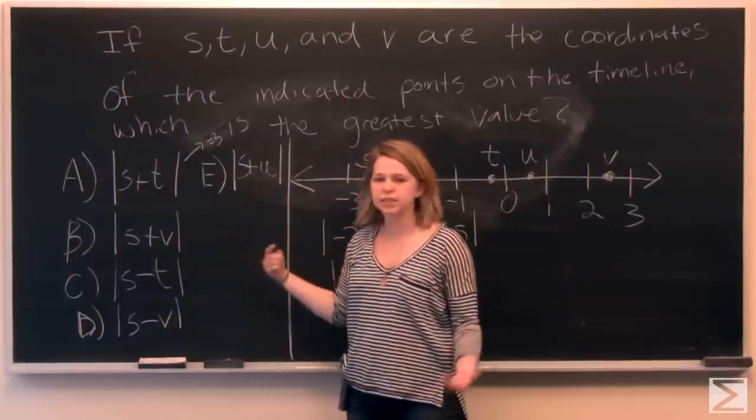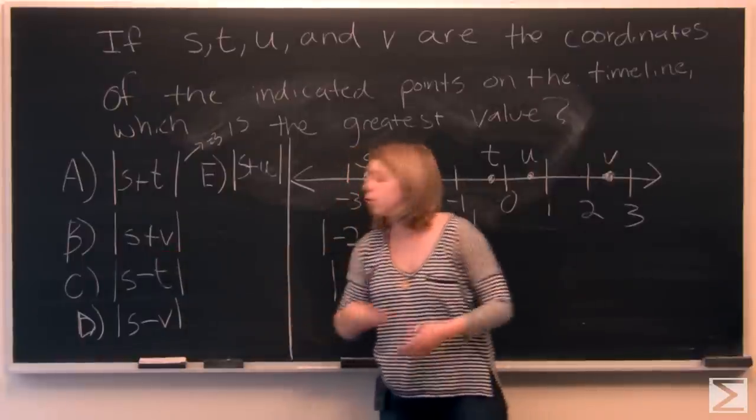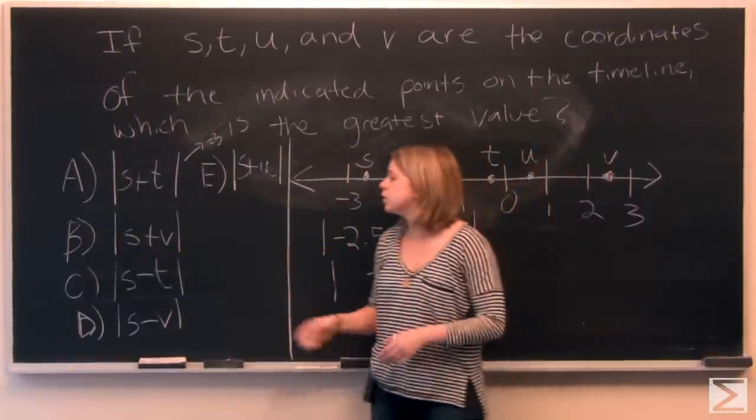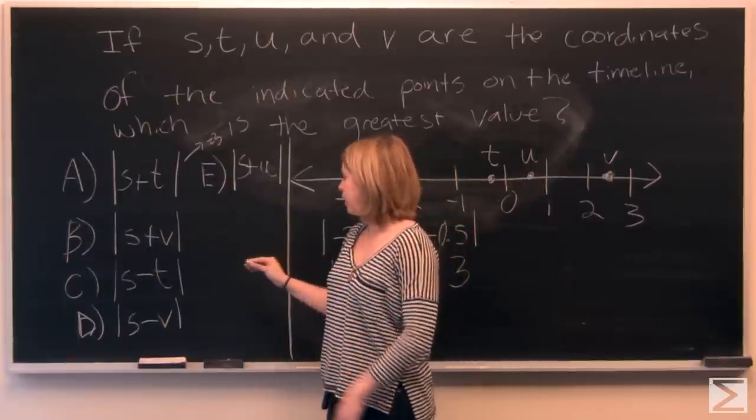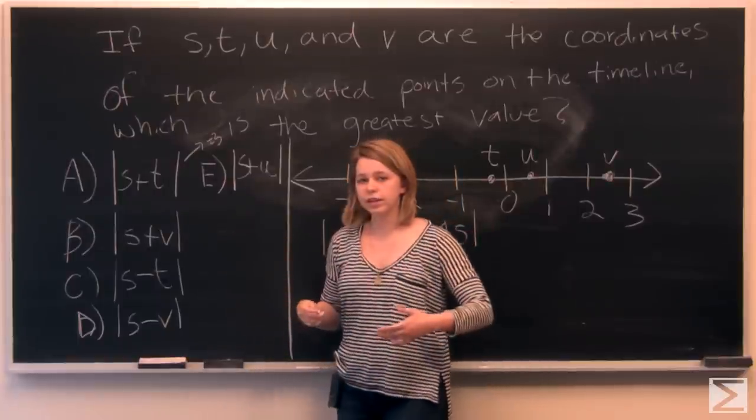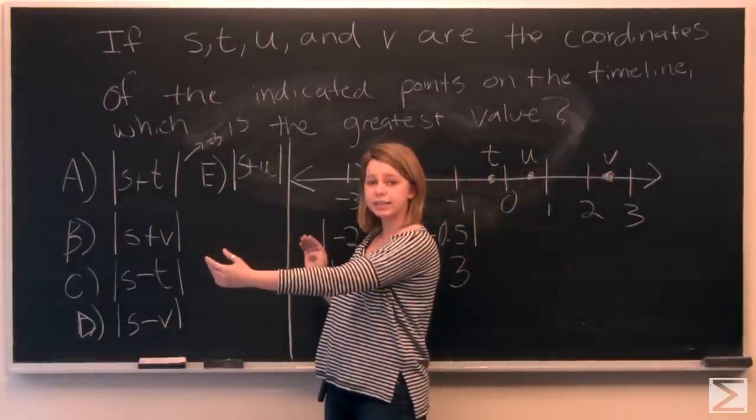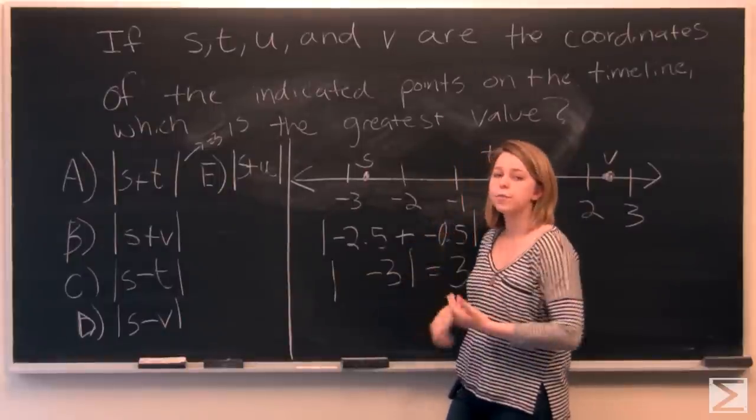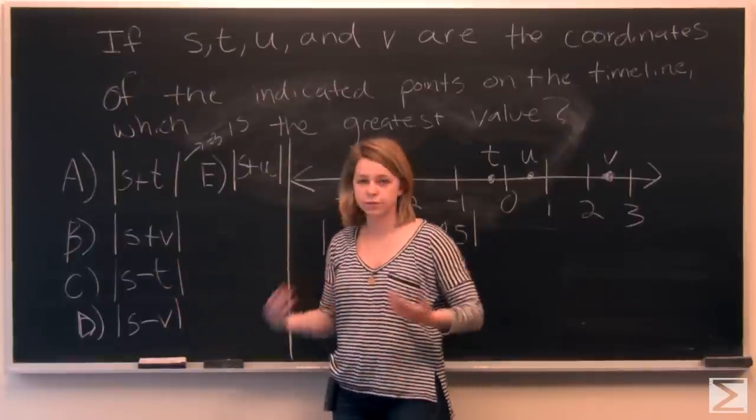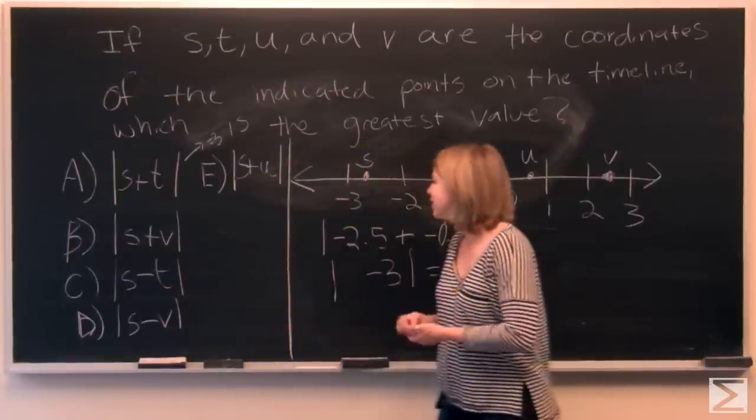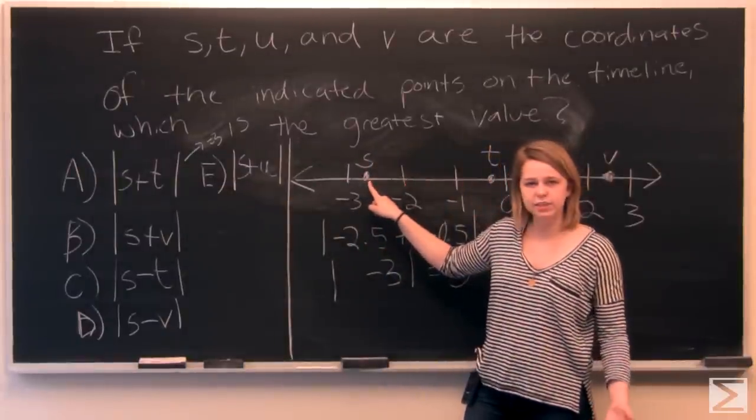So if we look at the other answer choices we can see a trend. All of them start with S plus one of the other variables or S minus one of the other variables. So we know that what we need to look for within the absolute value is the largest number. We're looking for either the biggest number less than 0 or the biggest number greater than 0. Because with the use of the absolute value all of our final answers will be positive.